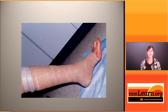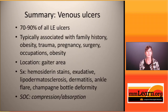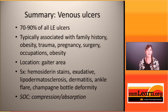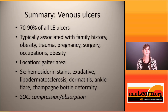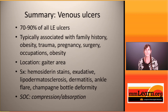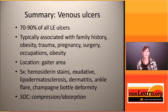This shows the application of a compression wrap from the base of the toe to just below the knee. To summarize, venous ulcers include 70–90% of all lower extremity ulcers. They are usually associated with a family history, obesity, trauma, pregnancy, surgery, or occupations requiring prolonged standing. We typically see them in the gaiter area, that is the area between the knee and the ankle. Classic symptoms include hemosiderin staining, which is that dark hyperpigmentation.